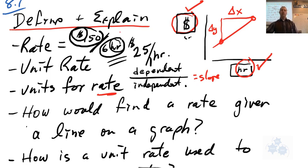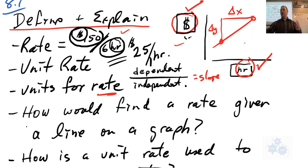So all that's important. What's a rate? What's a unit rate? The units for the rate. And how would you find a rate given a line on a graph? If we're talking about a graph, the rate between the two variables — that's the rate of change — would be the slope between any two points. If it's a straight line, then you have a constant rate throughout the problem.